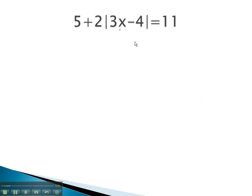In this problem, you notice the absolute value is on the left side with the 5 and 2. We must first get rid of the 5 and 2 before we can solve this equation.